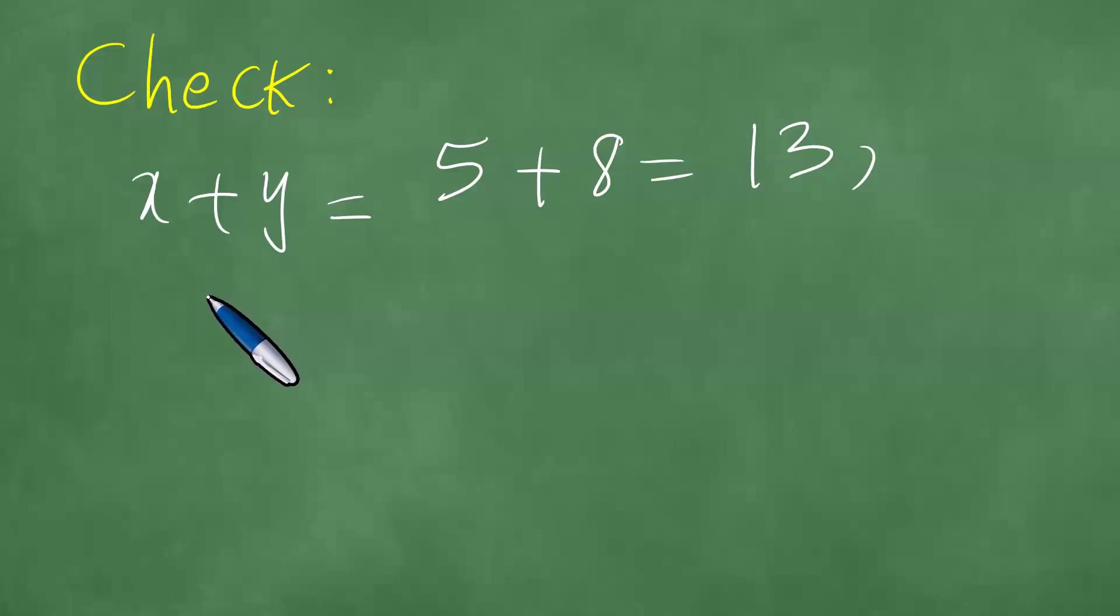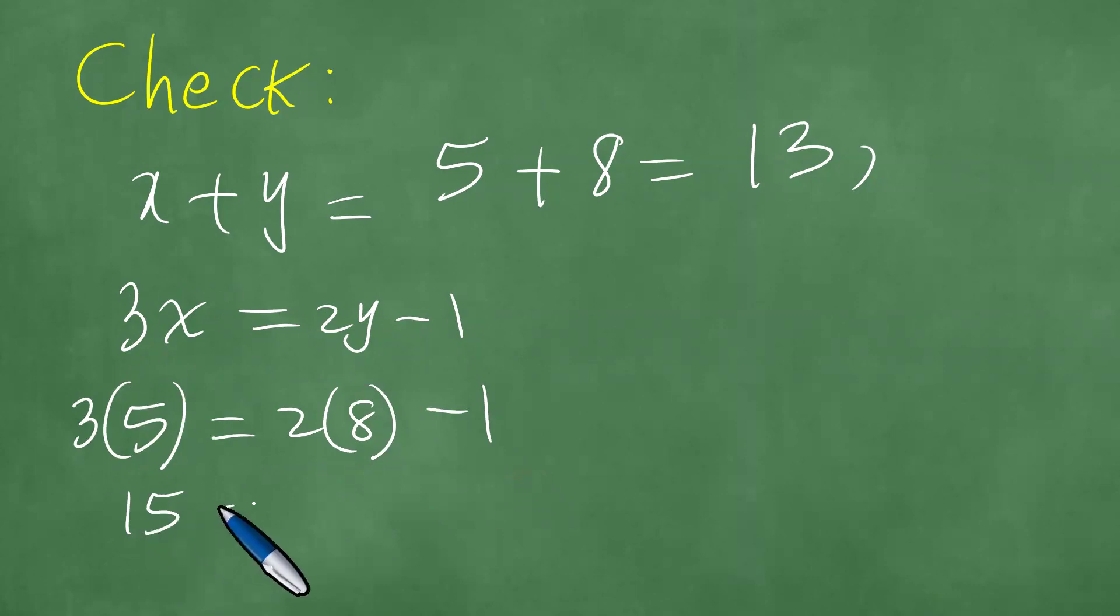Looking at the following, moreover, 3x is the other equation. 3x equals 2y minus 1. Let's check if the values of x and y satisfy this. x equals 5, y is 8. Which means it is 15 equals 16 minus 1. It is also 15.